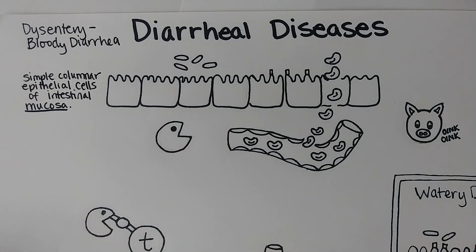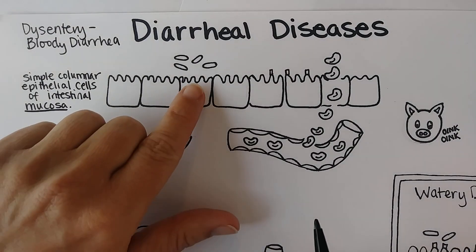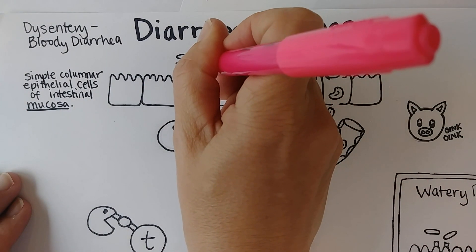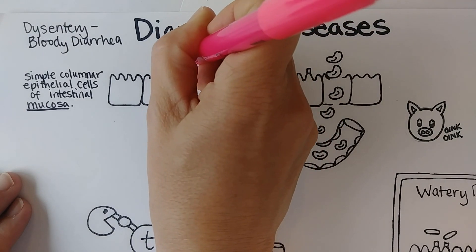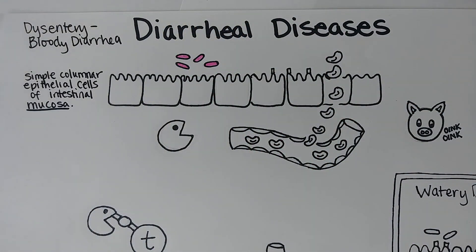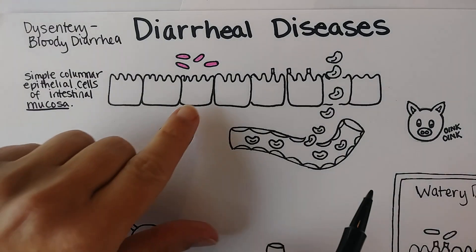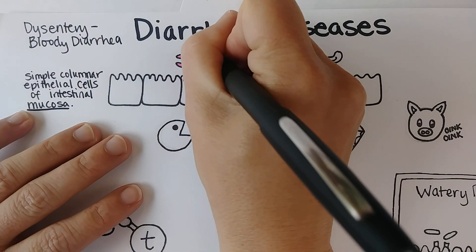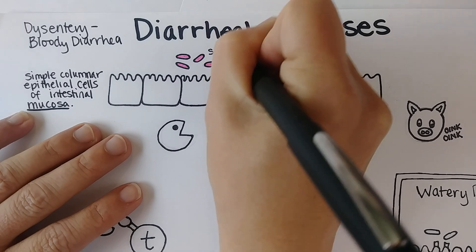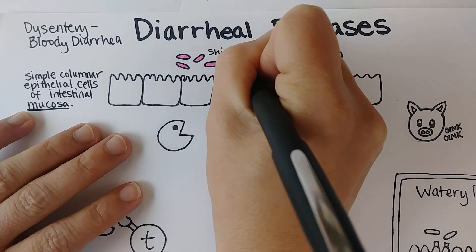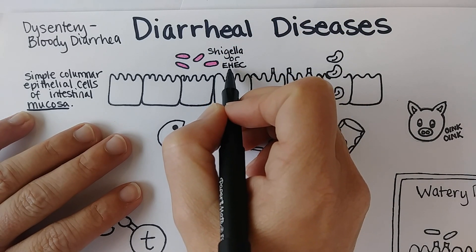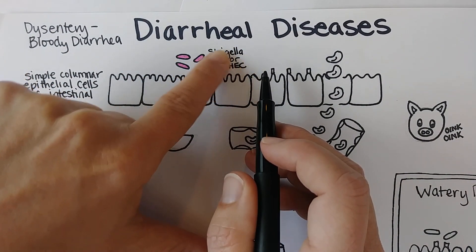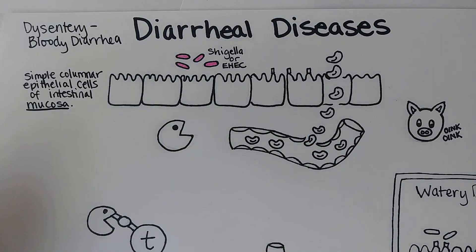A lot of times with bacterial infections it's actually the toxin that causes the big problem. Let's imagine this represents Shigella bacteria — it's gram negative — or E. coli, specifically enterohemorrhagic E. coli, also known as EHEC, where entero means intestine and H stands for hemorrhagic. If we're going to end up with bloody diarrhea and dysentery, we need to figure out what these bacteria are doing to cause that.